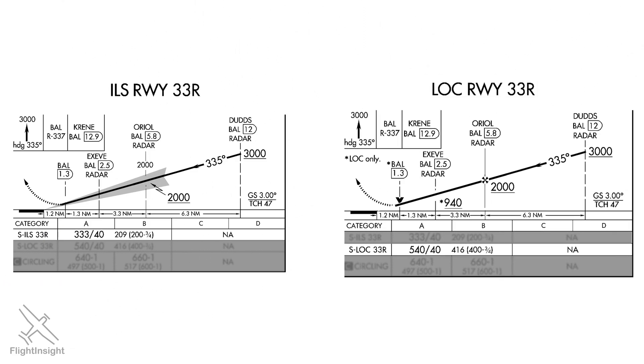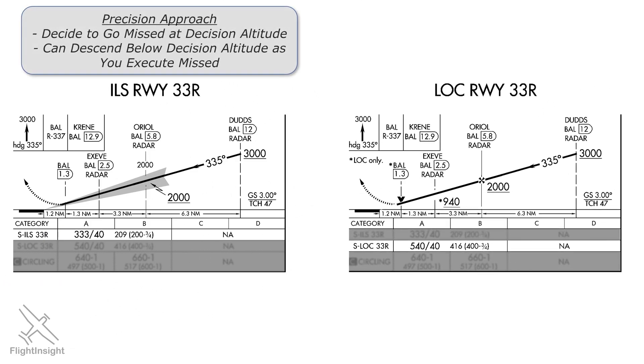So let's summarize these differences. On the ILS, a precision approach, you decide to go missed at the decision altitude, in this case 333 feet. You're allowed to descend below the DA briefly as you execute the missed approach.